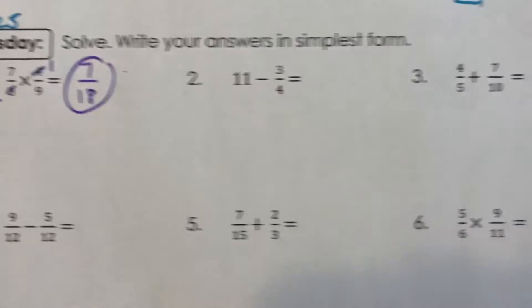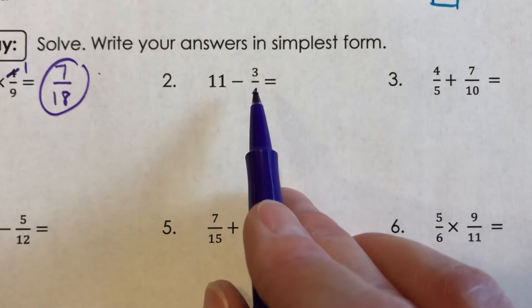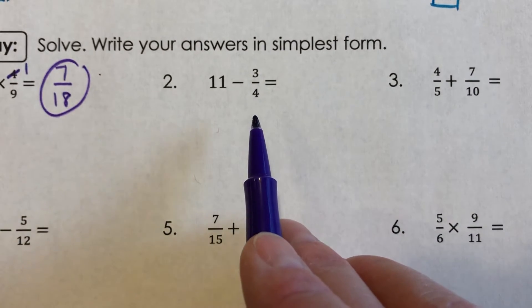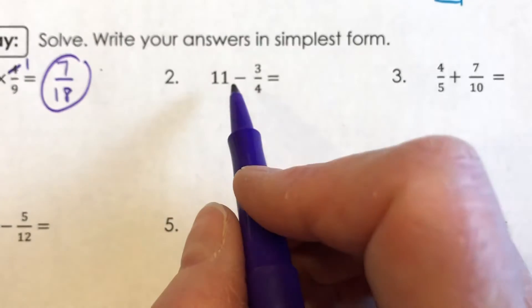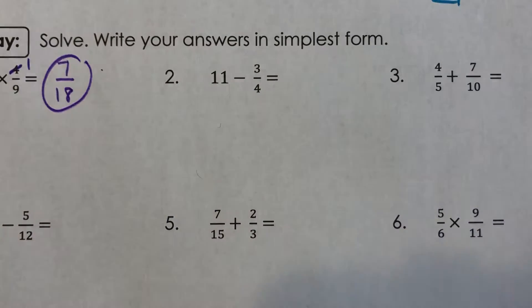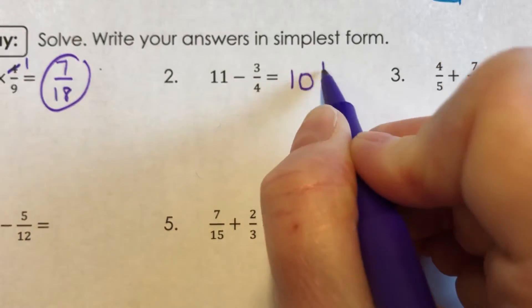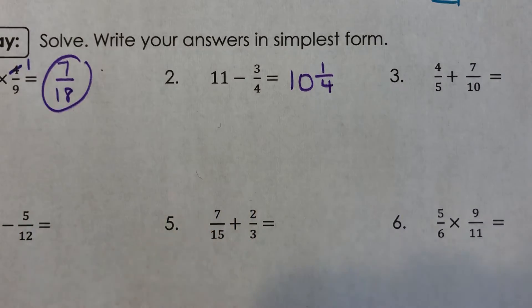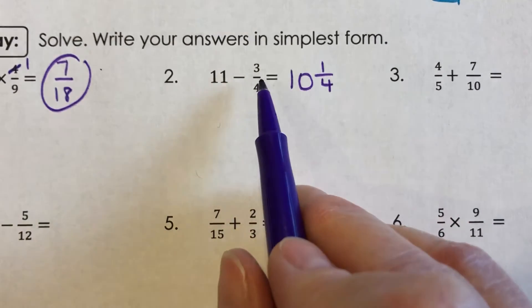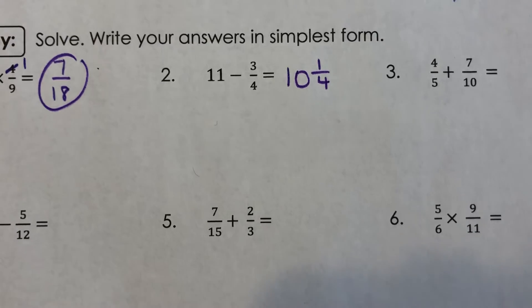For number two, it's 11 minus three fourths. Now I bet you this is one you could do in your head. Pretend I put this up on the board for number talk. If you have 11 and you take three fourths away, what do you have left? Well, you would have 10 and one fourth. Isn't 10 and one fourths plus three fourths eleven? Yes.